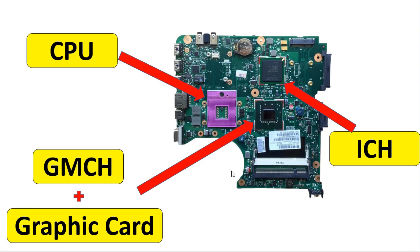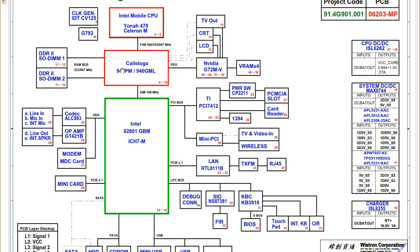There is also a motherboard variant with just three chipsets: the CPU socket, the GMCH or AMCH integrated with the graphic card, and the ICH. The ICH is responsible for all ports of the motherboard. The graphic card is integrated with the chipset, and the ICH handles port connections including the display outputs.